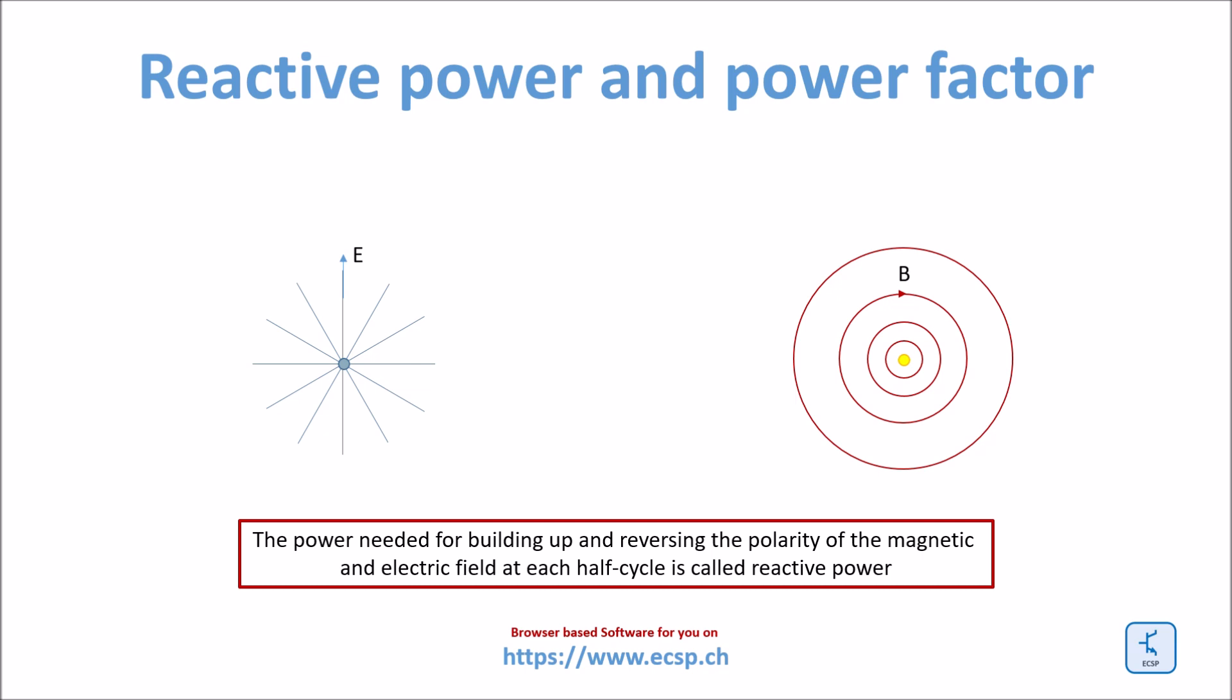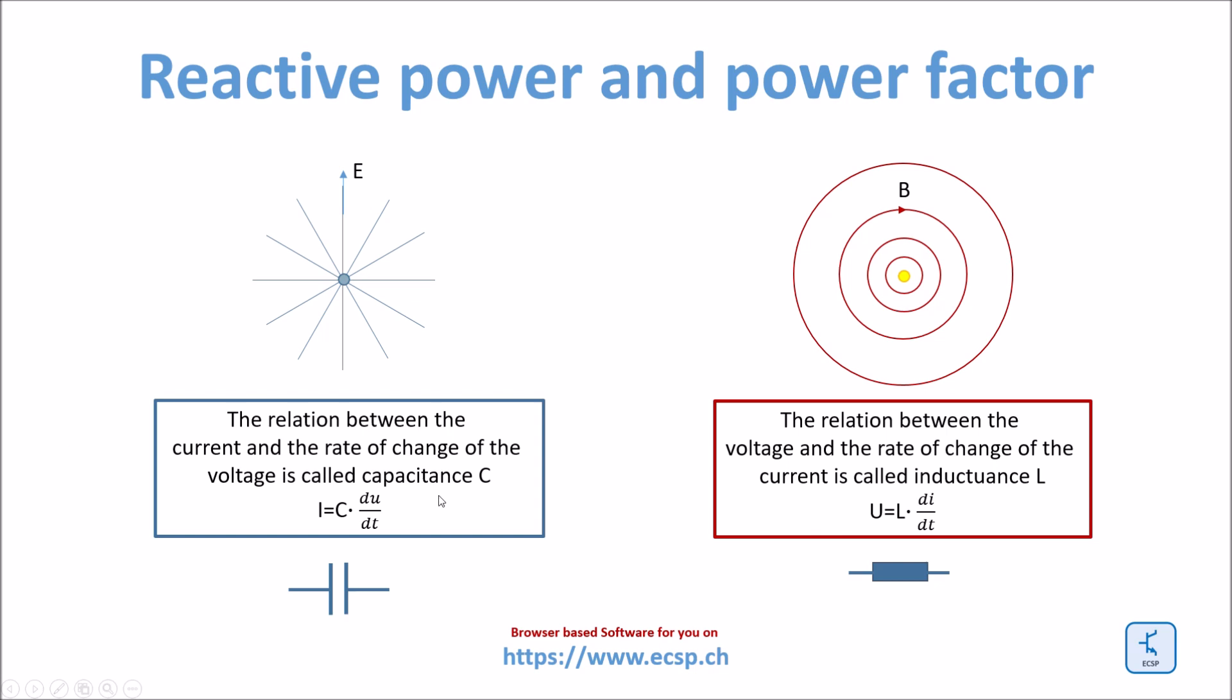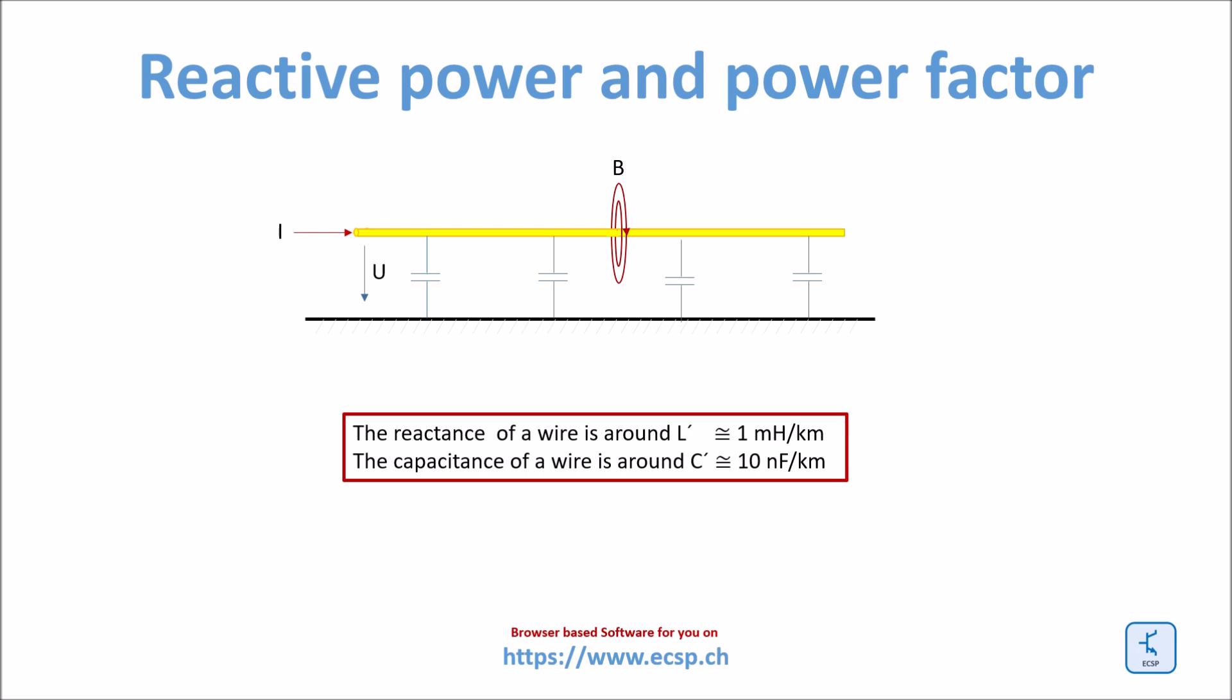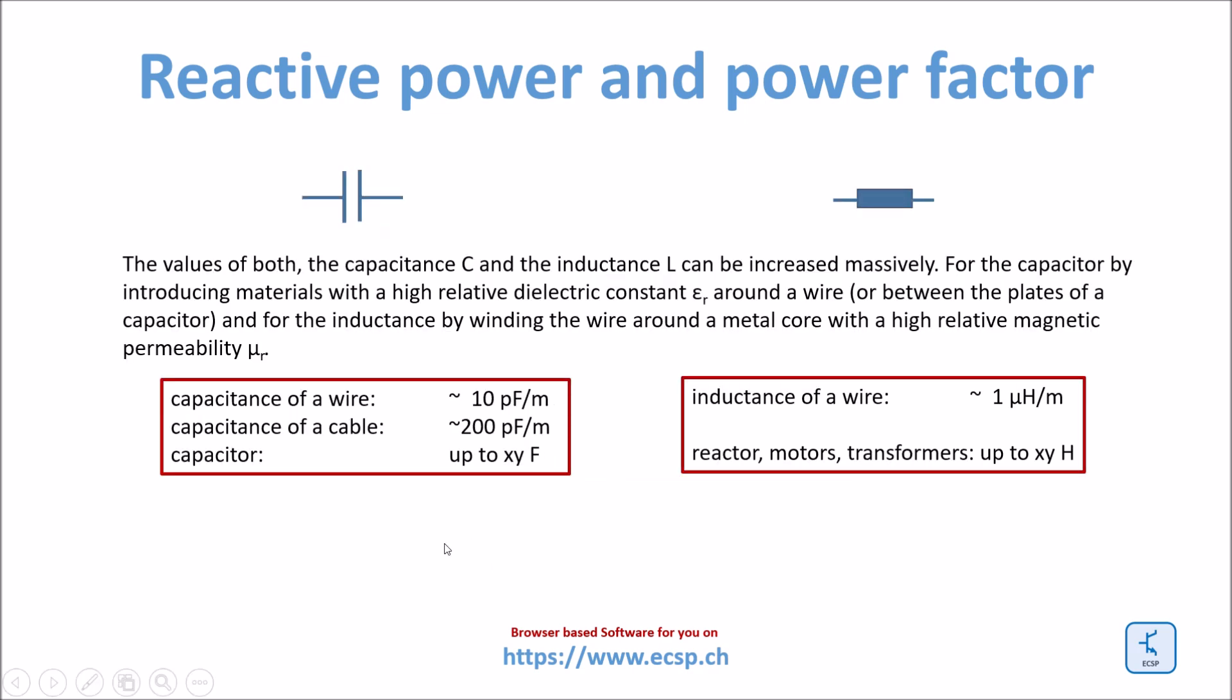This reactive power is oscillating back and forth between the wire or any capacitor or inductor and the source. The relation between the current and the rate of change of the voltage is called capacitance, i = C dU/dt. And the relation between the voltage and the rate of change of the current is called inductance, U = L di/dt. Typically the reactance of a wire is around 1 mH per kilometer. The capacitance of a wire is around 10 nF per kilometer. It is clear that it is not only wires who provide capacitance and inductances.